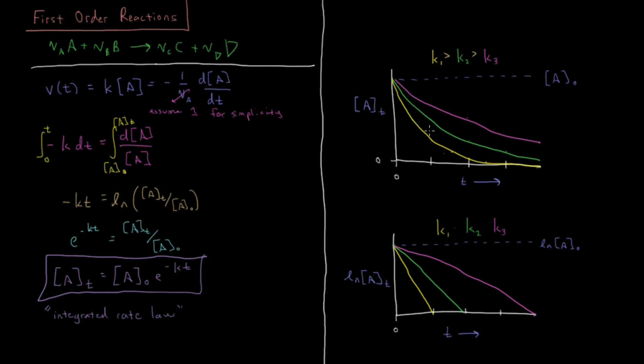K1 in yellow is the fastest reaction as you see it decays to zero the fastest. Similarly then if you take the natural log of both sides here you have natural log of A of T equaling the natural log of A naught minus KT. Let me write that out. If you take the natural log of both sides you have natural log of AT equals minus KT plus natural log of A naught.